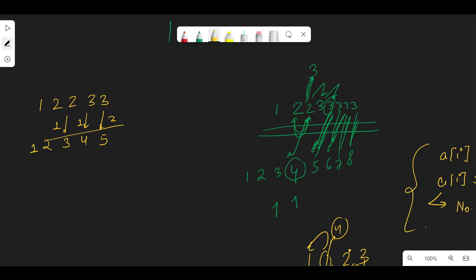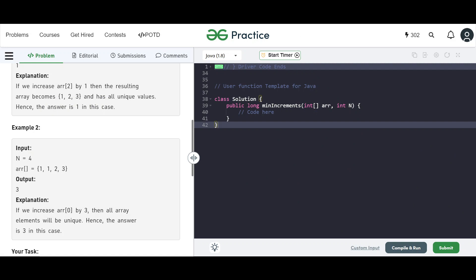So let's build the logic in code. So we go to code and what we're saying is we are sorting the array. And after that we are going through: i equals to one, i is less than N, i++. If array[i] is greater than array[i-1], then all good.